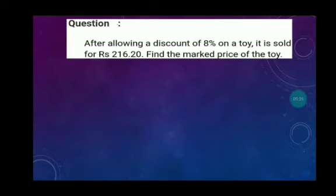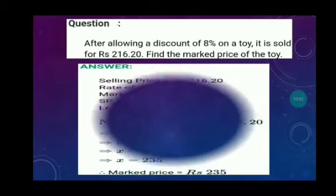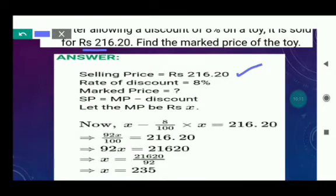Next question: After allowing a discount of 8% on a toy, it is sold for Rs. 216.20. Find the mark price. In the previous question mark price was given; here selling price is given as Rs. 216.20, and we need to find the mark price. So the formula is: SP = MP minus Discount.